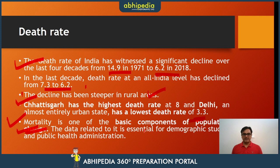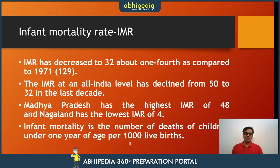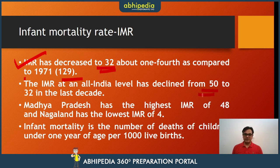Data related to mortality is essential for demographic studies and public health administration. Moving ahead to Infant Mortality Rate: IMR has decreased to 32, which is about one-fourth of the 129 recorded in 1971. In the last 10 years, it has come down from 50 to 32 — a very good improvement for India. Madhya Pradesh has the highest IMR at 48, while Nagaland is the best performer with just 4. The infant mortality rate is the number of deaths of children under one year of age per 1000 live births.